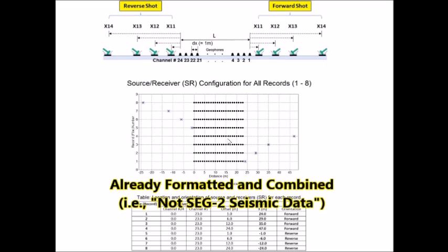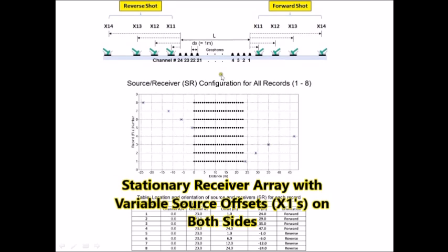Not SAG2 seismic data. First, the 24 channel receiver array stayed at the same place all the time. This is channel number 1 location and channel number 24 location here. There were total 4 different source offsets used on this side, which is forward shot.